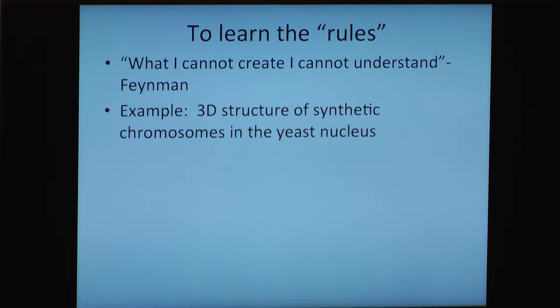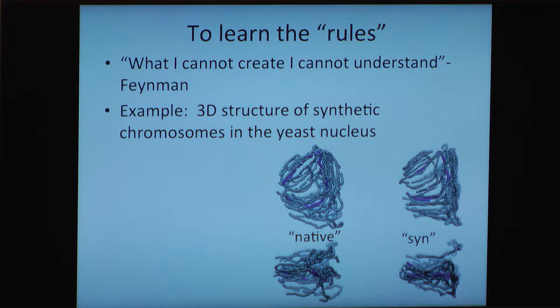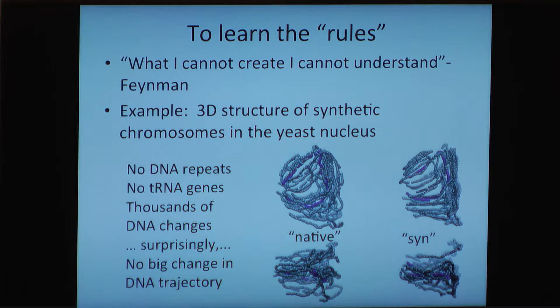An example of something we've learned by doing this is the three-dimensional structure of synthetic chromosomes in the nucleus of a yeast cell. On the right you see maps of chromosomes taking trajectories through the nucleus — done using a technique called Hi-C. This is the fifth chromosome synthesized at Tianjin University. We have the native version and what happens when we make a synthetic version with thousands of changes to the DNA sequence. We've removed all repetitive DNA and tRNA genes, yet there's only minimal impact on the trajectory of the DNA and the overall structure.